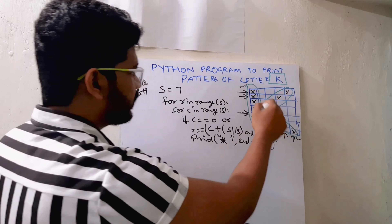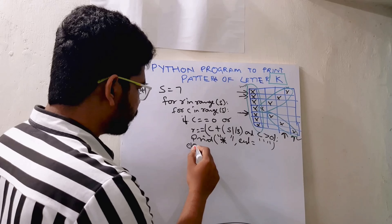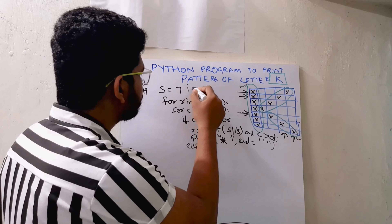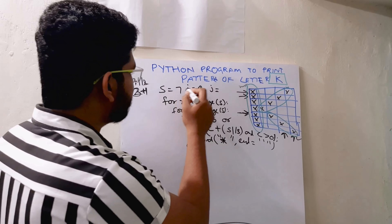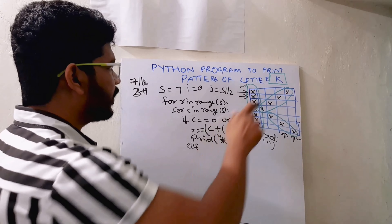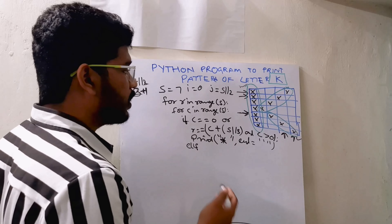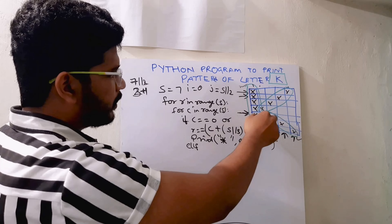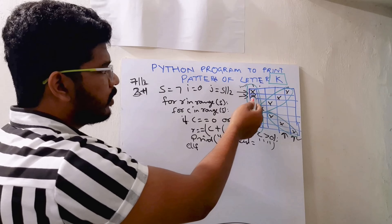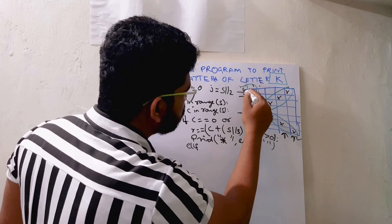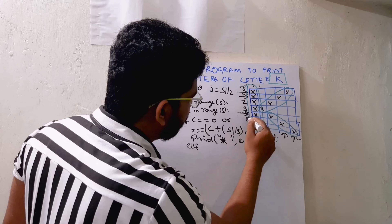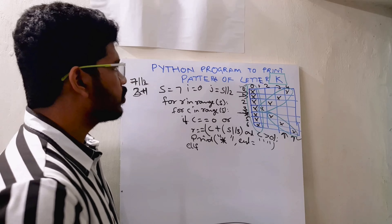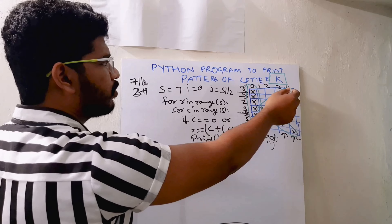I write the condition for the lower diagonal using elif. I take two variables: i equals zero, and j equals s // 2. I need to get the last position and print from there. It's not a perfect square — for size 7 there are 7 rows but only about 4 columns for this part. I'll start from s // 2, which approximately equals 3 in this case.